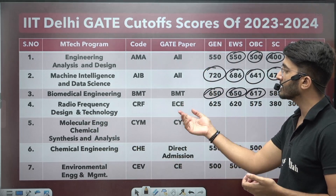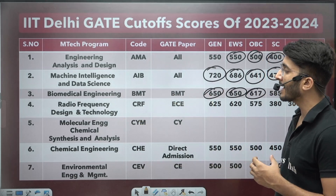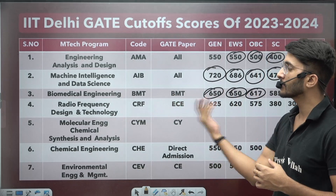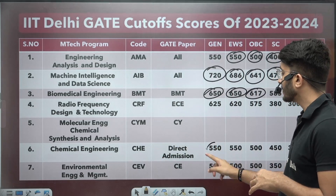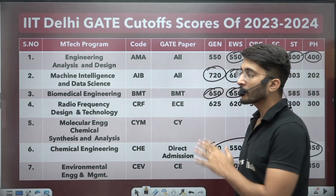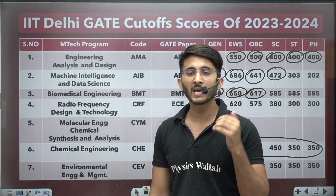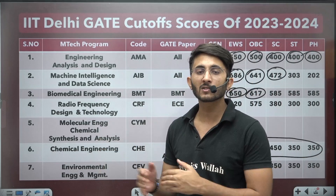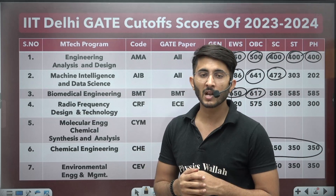For Molecular Engineering and Chemical Synthesis and Analysis, this is a new course and chemical engineering students can join it. For some courses, direct admission is available and cutoff marks per respective category are listed. This PDF data will be shared on the Kuldeep Sir underscore PW Telegram channel, where you can search and join to access lots of information.